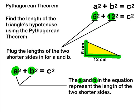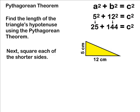After substituting the lengths for a and b into our equation, we must take the length of a and b and raise those to the second power. 5 to the second power is equal to 25 and 12 to the second power is equal to 144.